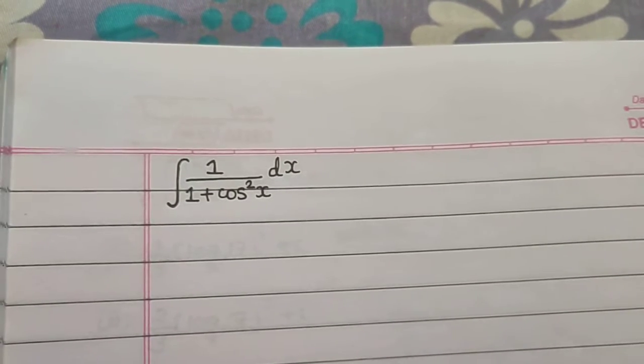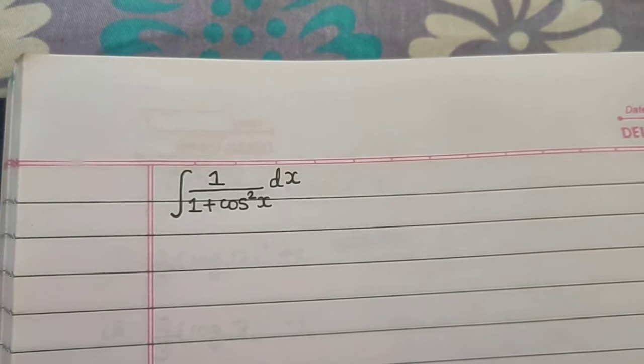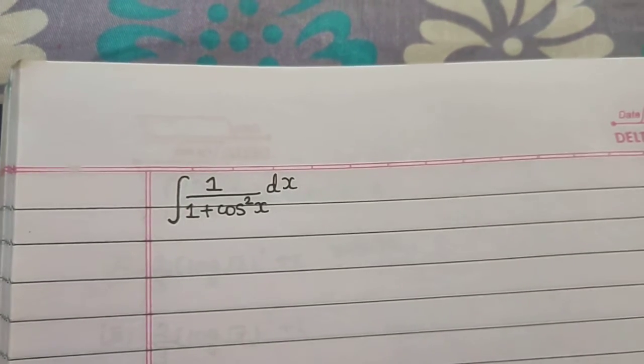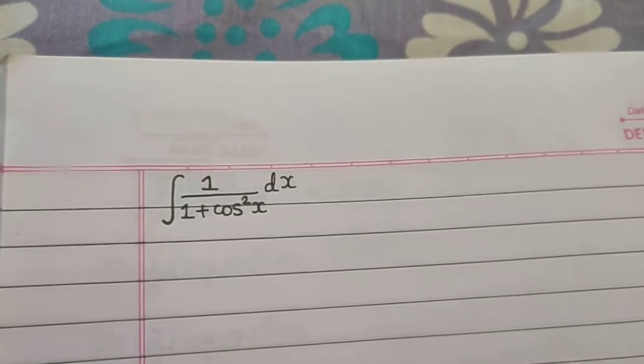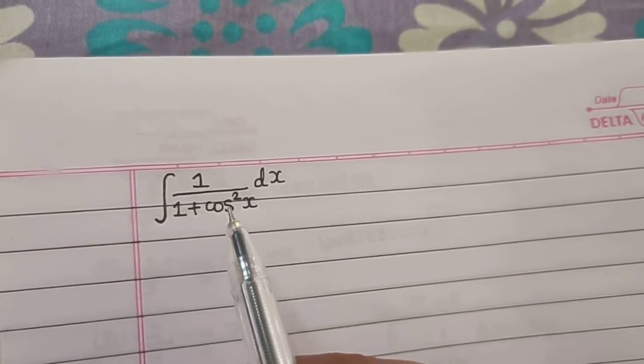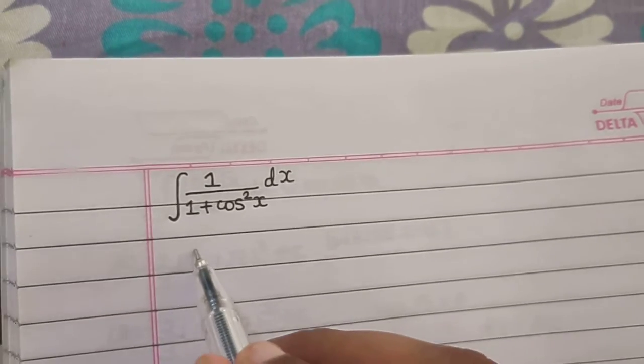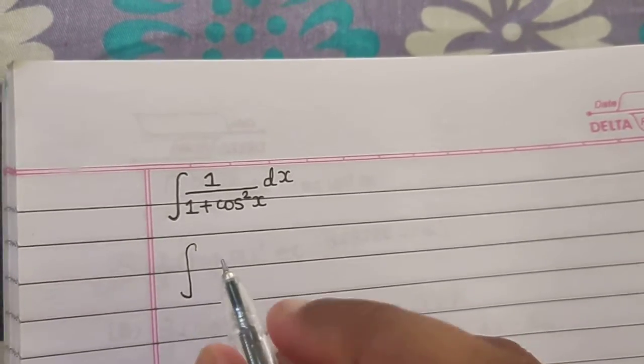We have to integrate 1/(1 + cos²x). There can be several approaches, but my favorite is to divide the numerator and denominator by cos²x.